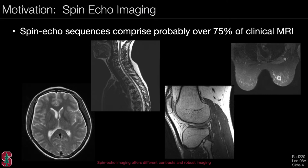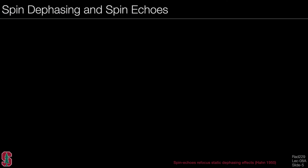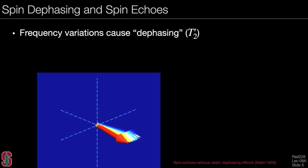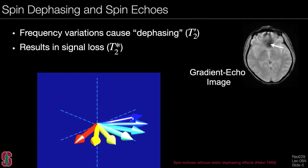Let us first look at spin dephasing effects and spin echoes. Frequency variations from static effects cause a dephasing effect, often referred to as T2 prime. This looks like a loss of coherence, and combined with T2 decay, this is referred to as T2 star decay.